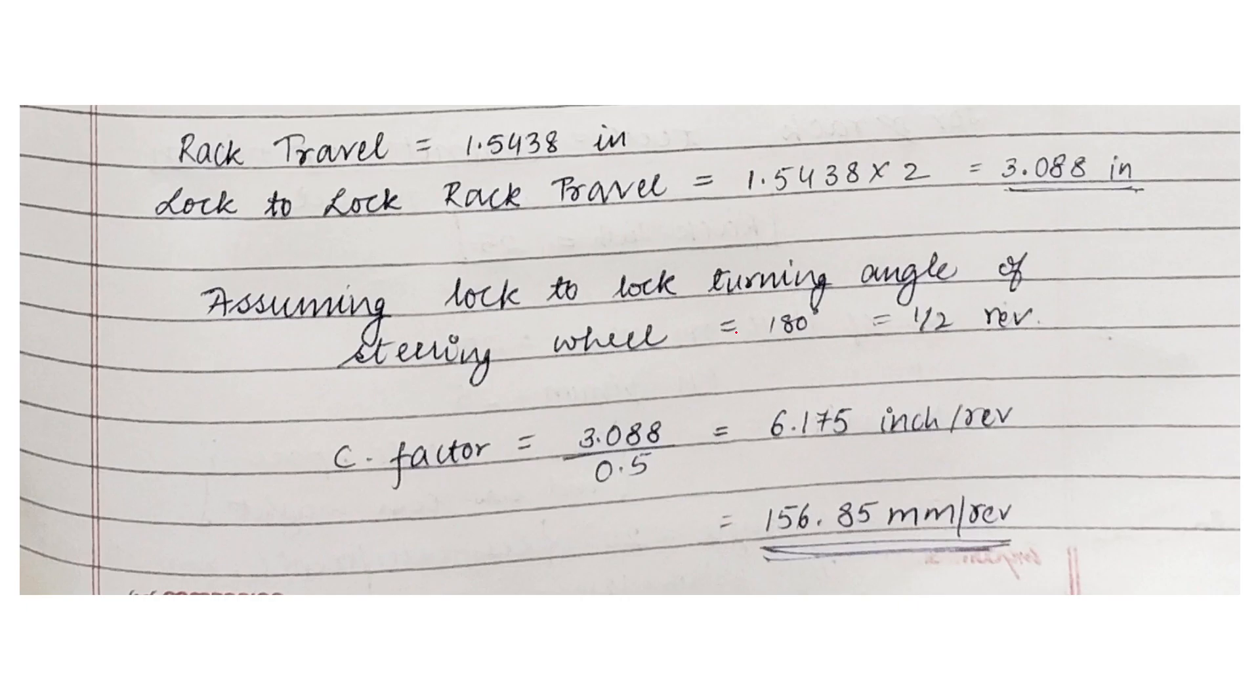The rack travel we get from the geometry as 1.54 inches. And the lock to lock rack travel comes out to be 2 times this value, that is when the vehicle is turned from extreme left to the extreme right. We assume the steering wheel turning as 180 degrees like half the revolution. For half the revolution we get the rack travel of 3.088 inches. We calculate the C factor which is the ratio of these two values, which comes out to be 156.85 mm per revolution.